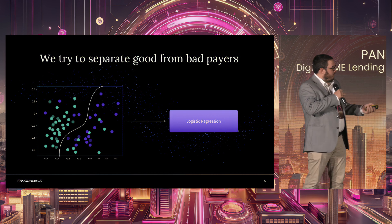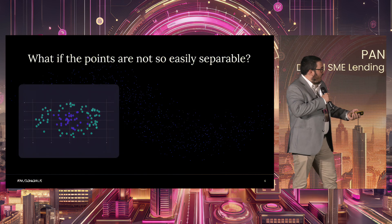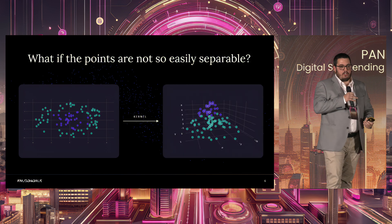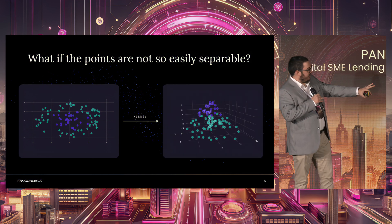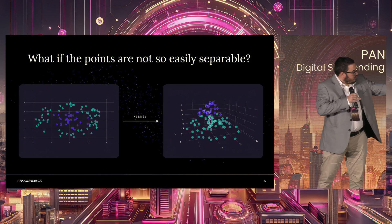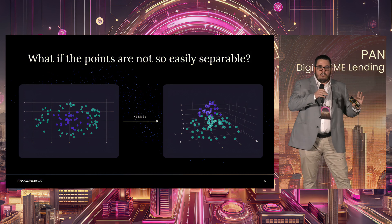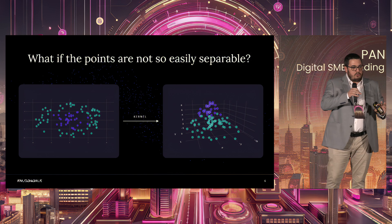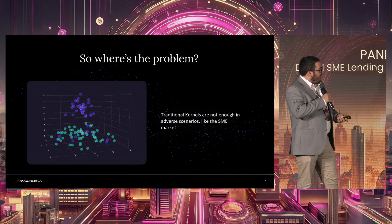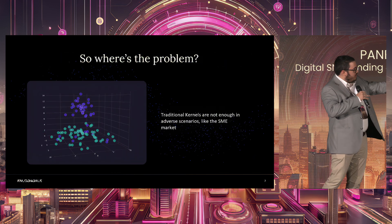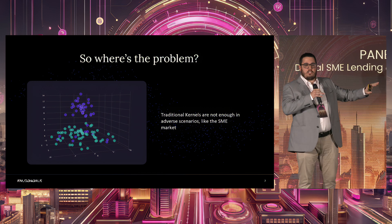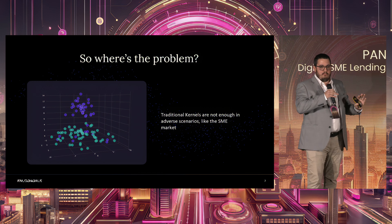One way of solving that is adding what we call a kernel. A kernel basically represents 2D data in 3D — in this second figure, in 3D, the points look more separable. You speak about surfaces instead of two dimensions. However, even with this 3D representation, traditional kernels are not enough in some adverse categories, and SMEs are an adverse scenario for lending.